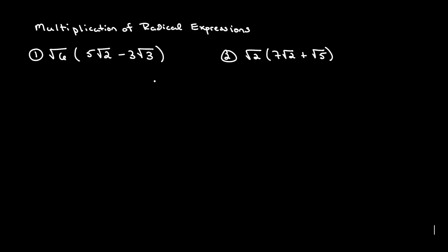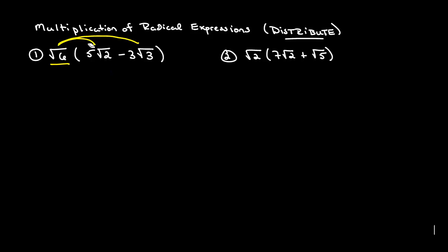In the second video, we'll take a look at the multiplication of radical expressions with addition and subtraction between. In this case, what we have to do is distribute our value in. So let's take a look at this first one. We've got the square root of 6 outside, so what we're going to do is distribute it into both of these terms.